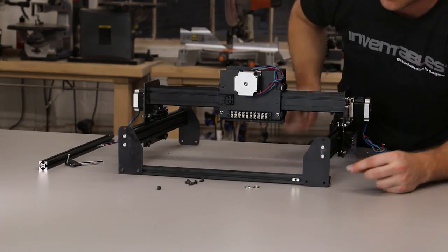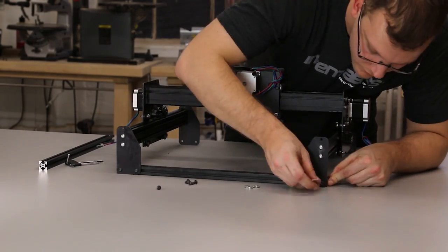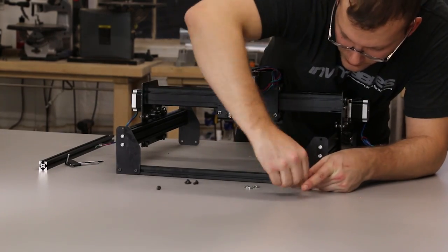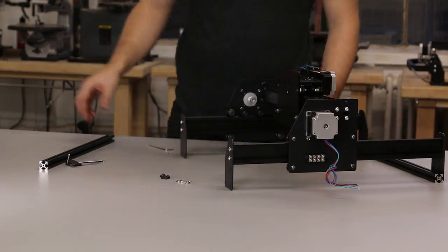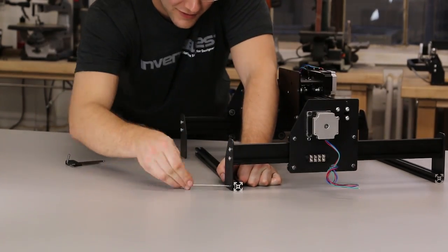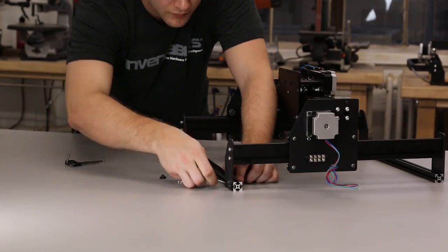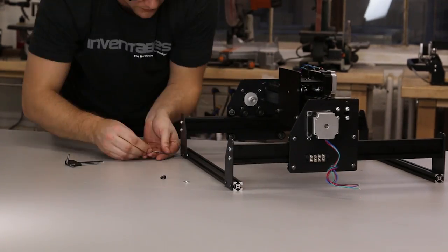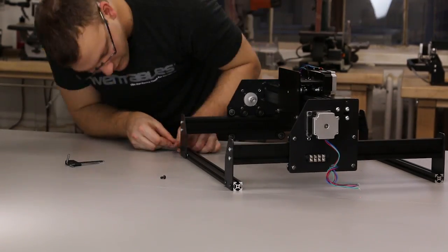You can use your wrench to slide the insertion nuts in the extrusion to line up with the holes on the end plates. It helps if you leave these all a little loose at first to align it correctly, and then tighten them all down once you have all of the screws into insertion nuts. We'll repeat this same process with the back side of the machine.